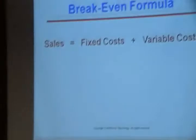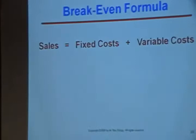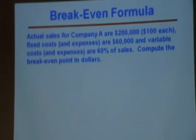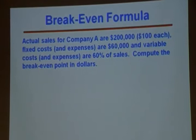I've got a continuing problem — one that lasts from this point until the end of class today. Let's use the break-even formula — Sales equals fixed costs plus variable costs — to find the break-even point in dollars based on this fact circumstance. Actual sales for our company are $200,000. We sell each product for $100. Fixed costs are $60,000. Variable costs are 60% of sales. Help me find the break-even point in dollars.